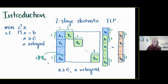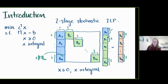Two-stage stochastic integer programs are defined by having some global variables x_0 which can appear in all constraints, denoted by sub-matrices A_1 to A_m. The remaining variables are split into blocks x_1, x_2, until x_n, and in each block of variables they only appear in a small number of constraints, denoted by sub-matrices B_1 to B_n.